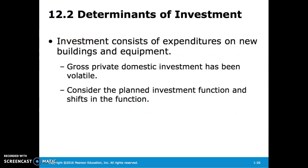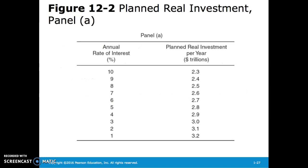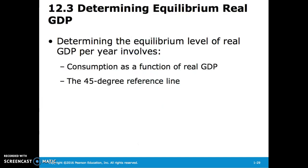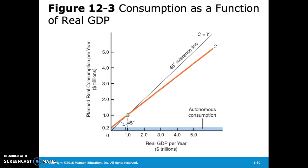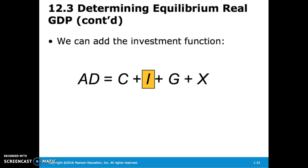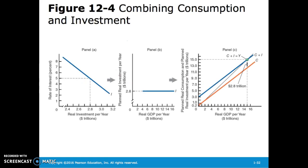Investments consist of expenditures on new buildings and equipment, and gross private domestic investment has been volatile. Consider the planned investment function and shifts in the function. Here we have our planned chart of total investment relative to the annual rate of interest and the graph of that relationship. To determine the equilibrium level of real GDP per year, we need consumption as a function of real GDP and the 45-degree reference line. We can add the investment function, where aggregate demand equals consumption plus investment plus government spending plus net exports.